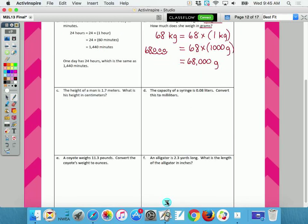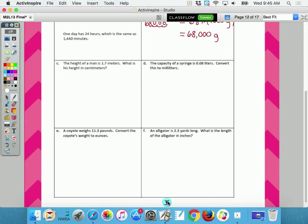The height of a man is 1.7 meters. What is his height in centimeters? So what two words to underline? Meters and centimeters. So I'm going from meters to centimeters. 1.7 meters equals?